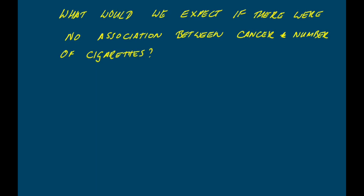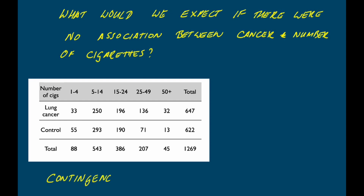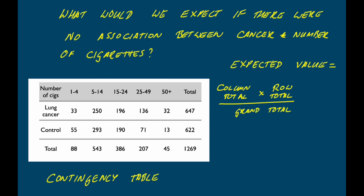In order to calculate this, what we need to do is produce something called a contingency table. This is a contingency table for our data — it's the same data as before but we've added in the row totals, the column totals, and the grand total, which is the total number of cases counted in the entire study. What we can do with our contingency table is calculate the expected value for each cell that we would expect to see if there were no association between our variables. We calculate this by taking the column total multiplied by the row total and dividing by the grand total.